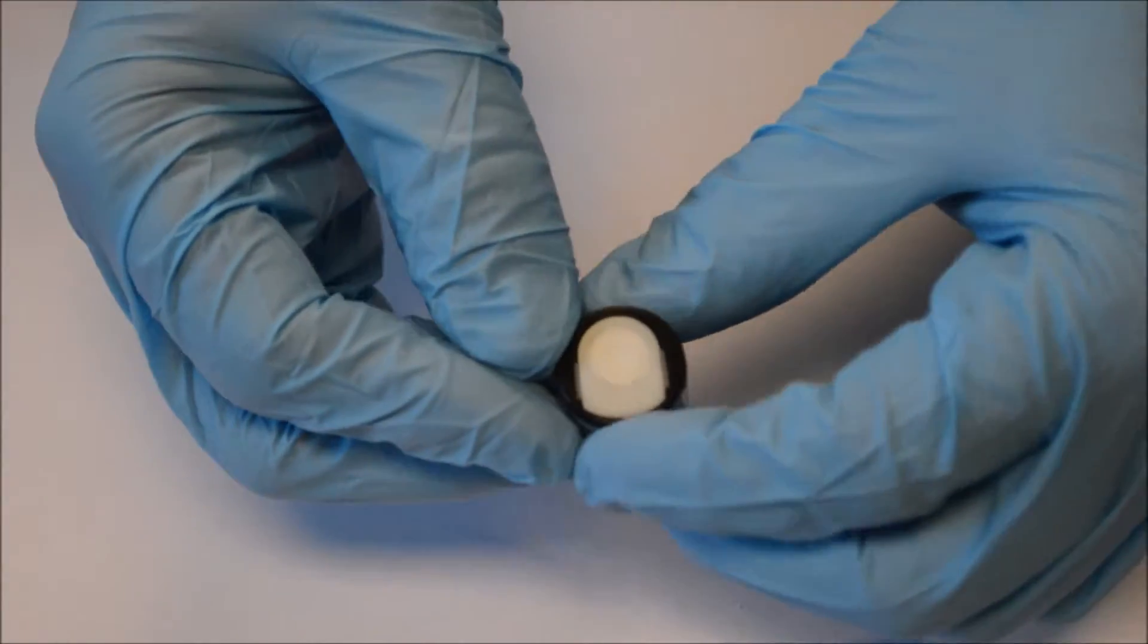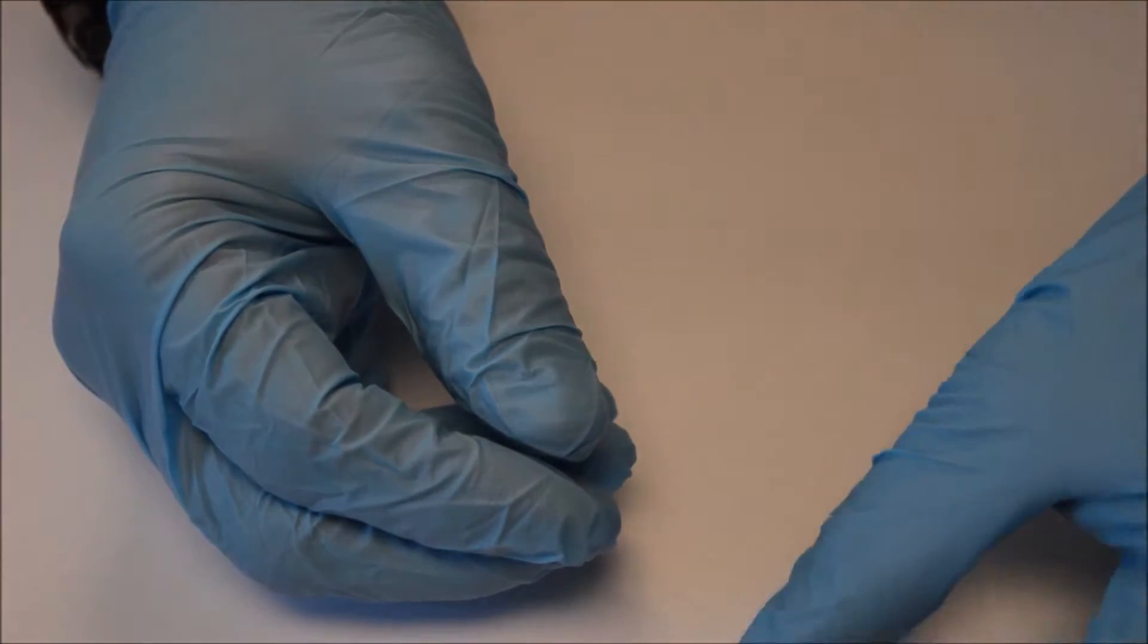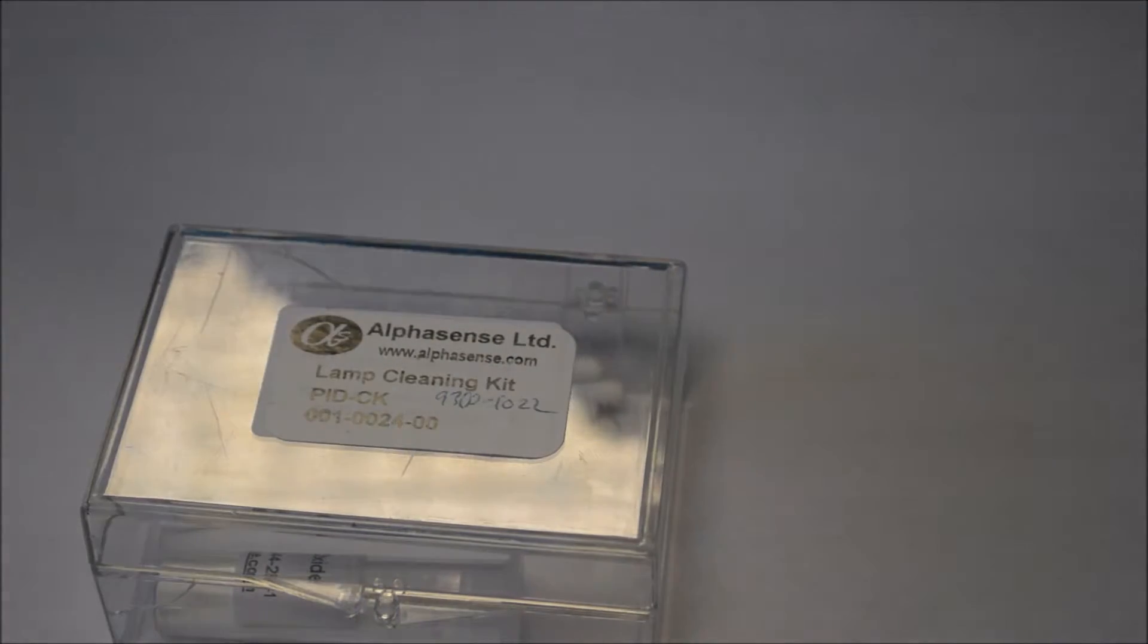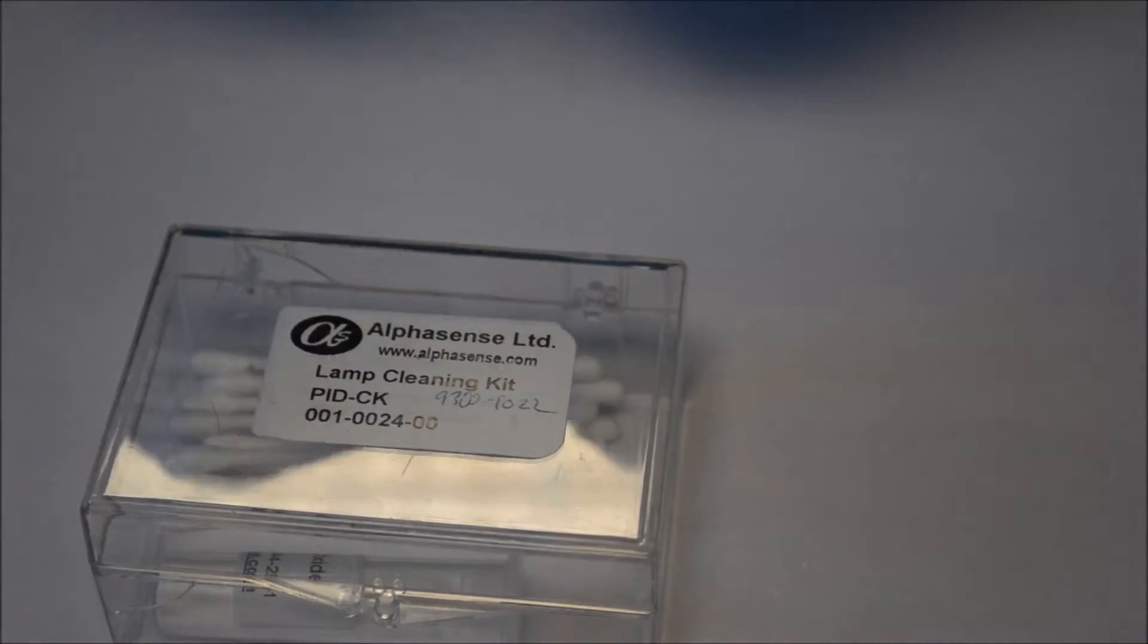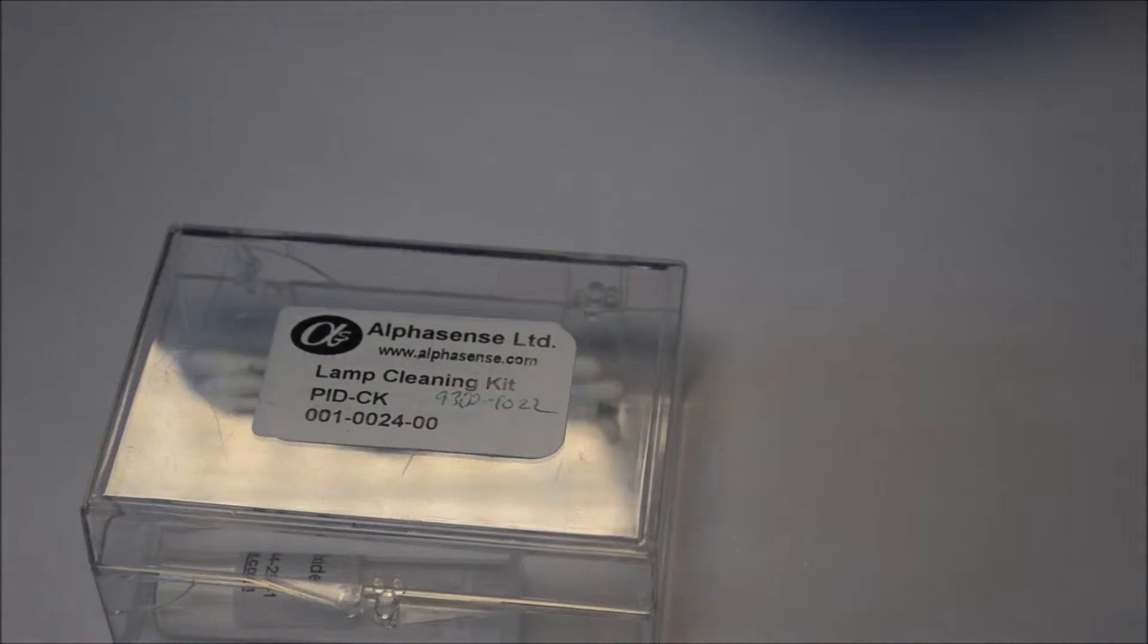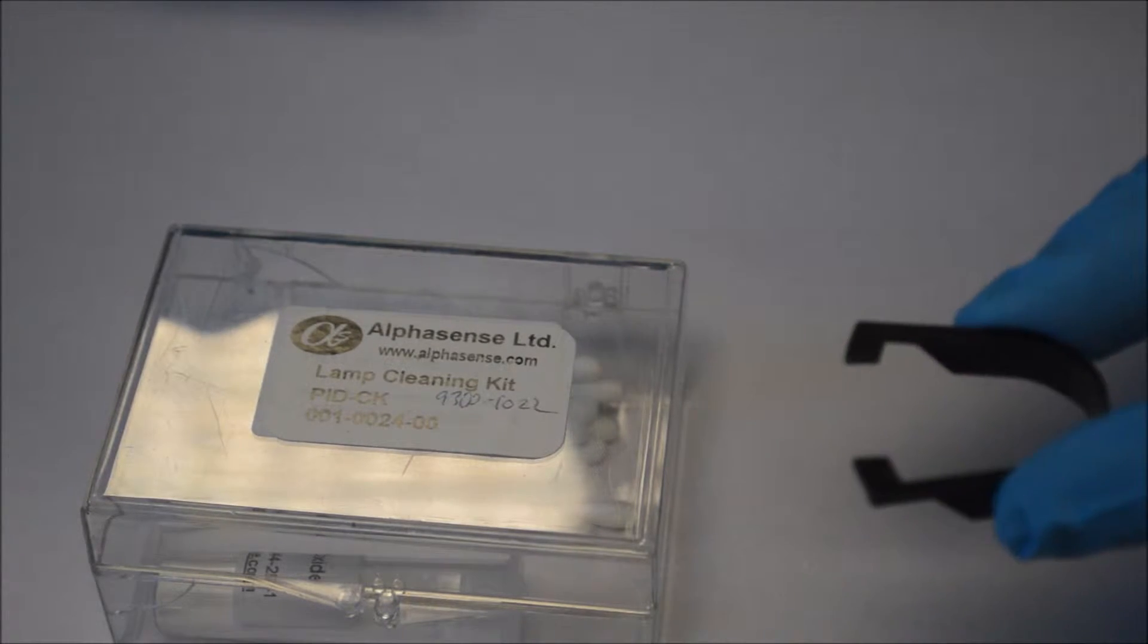The lamp needs cleaning generally every three months, depending on use. The tools you'll need to allow you to do this is you'll need a lamp cleaning kit which consists of some aluminium oxide, a cleaning compound and some cotton buds which allow you to clean the lens and you'll need an electrode stack removal tool.